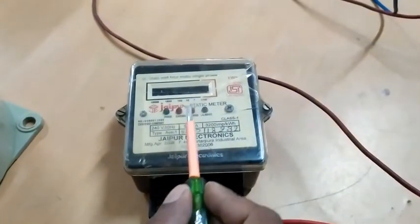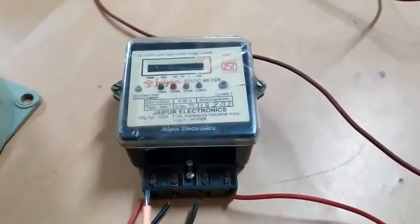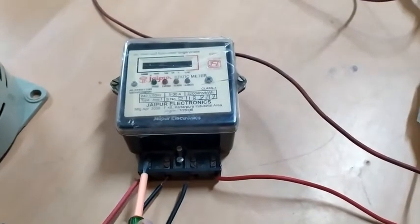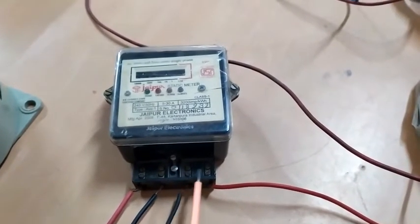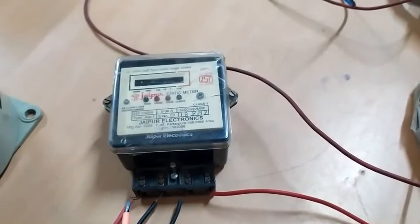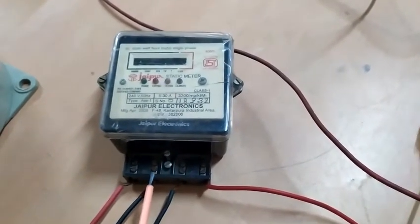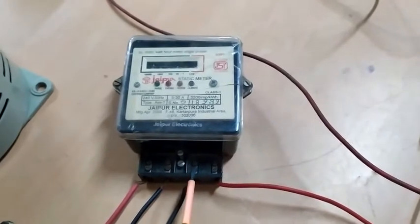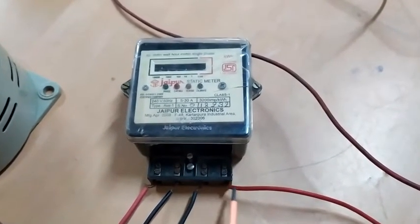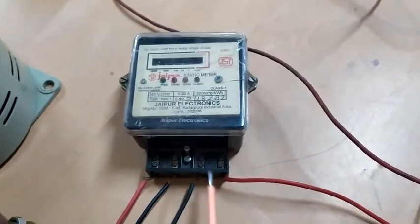Here is the static energy meter. You are having four terminals: S1, S2, L1, L2. S1 is the supply phase, supply line. S2 is the neutral. L1 is the neutral point and then L2 is the phase output. The four terminals.